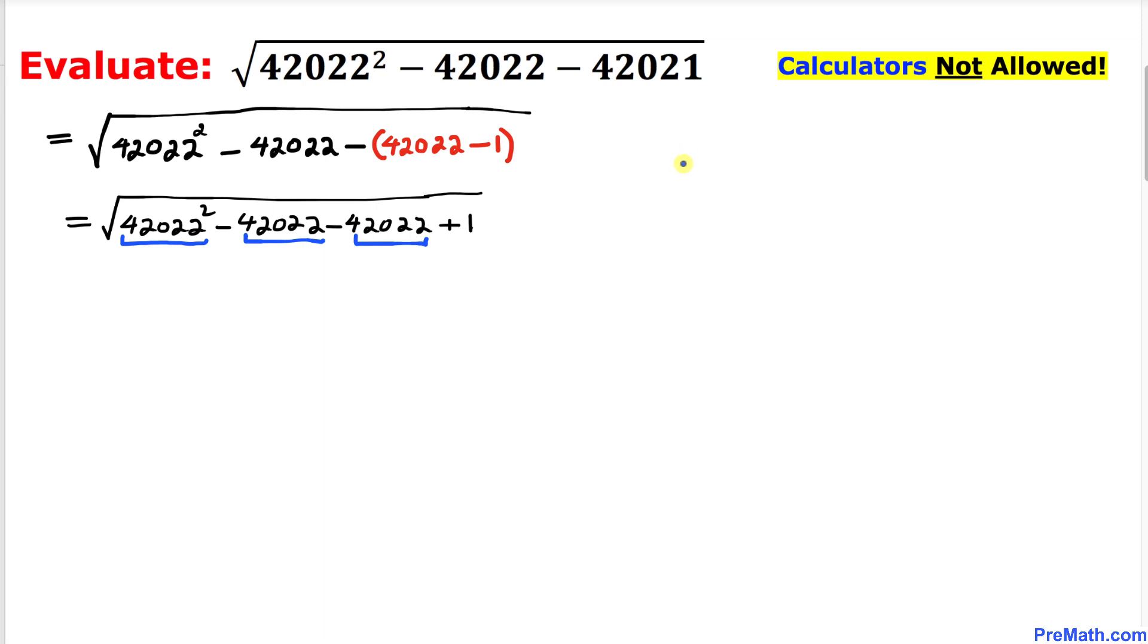Let me say let a equals 42022. Therefore, we can write this one as the square root of a squared minus a and then minus a and then plus 1.